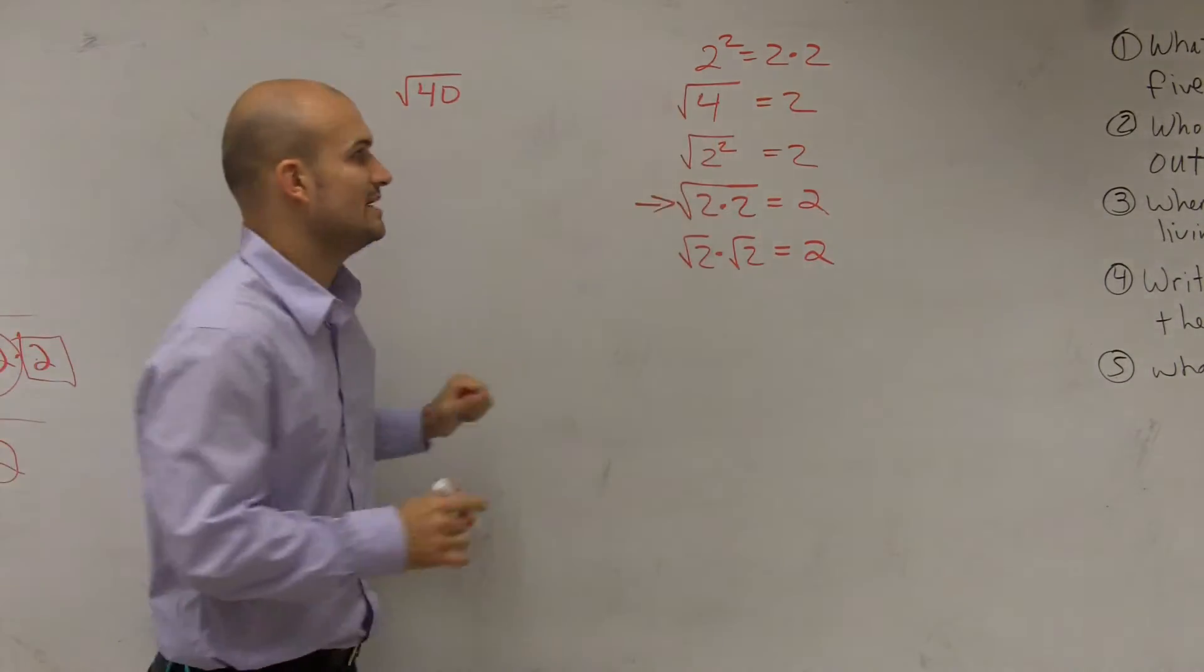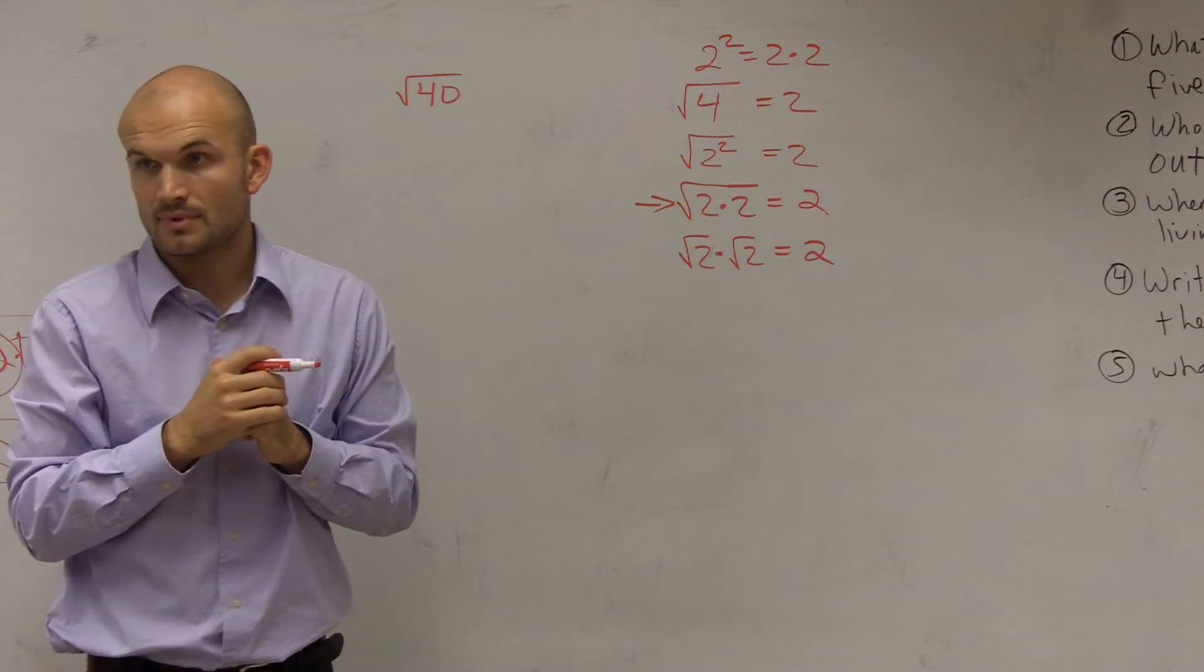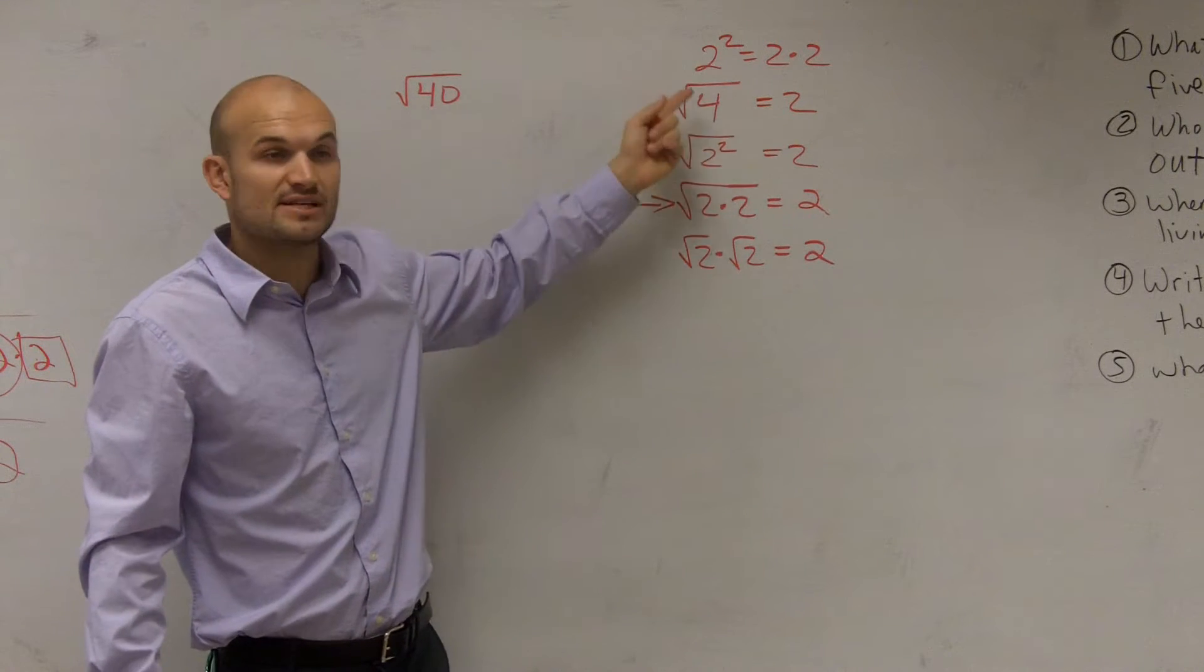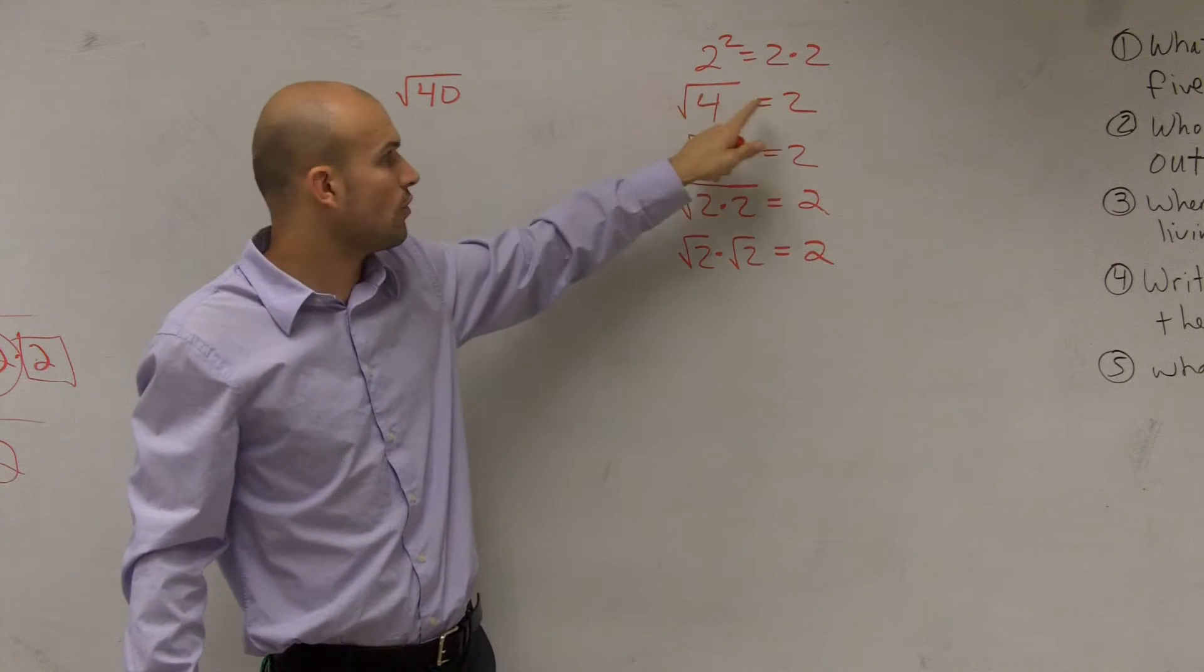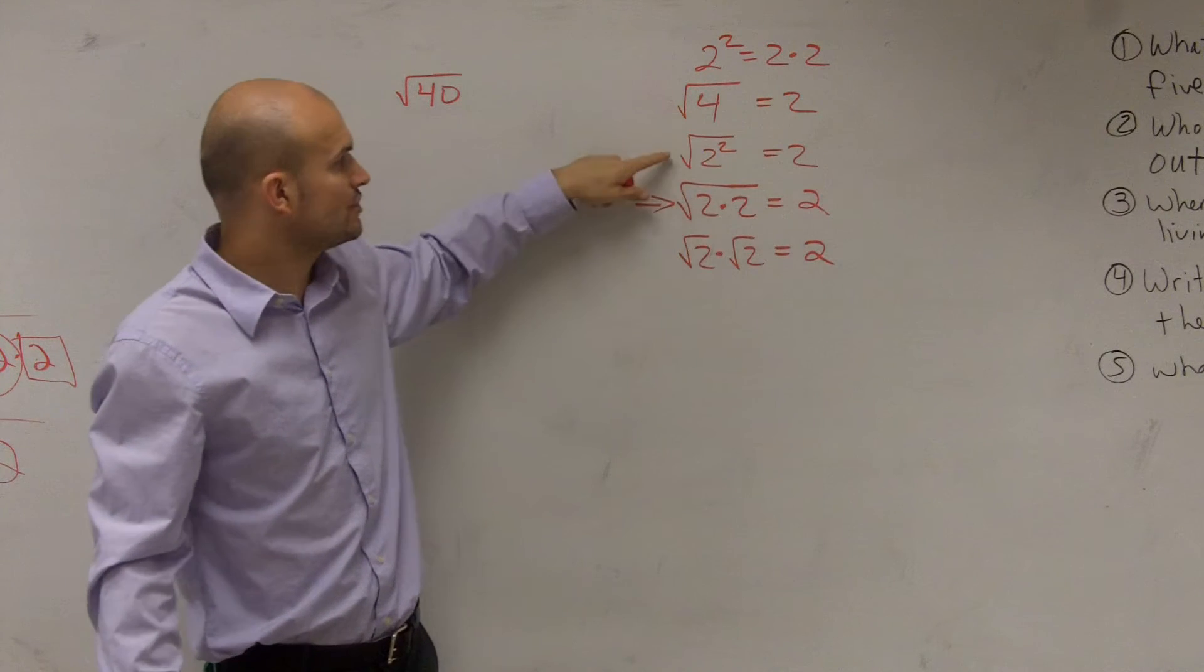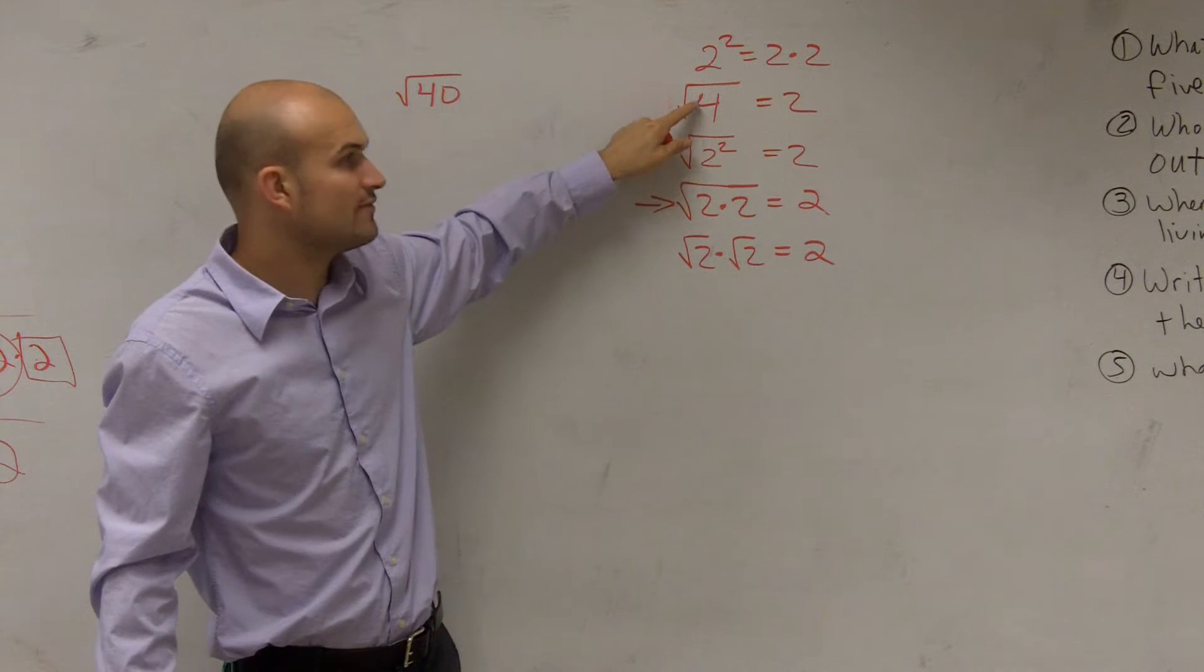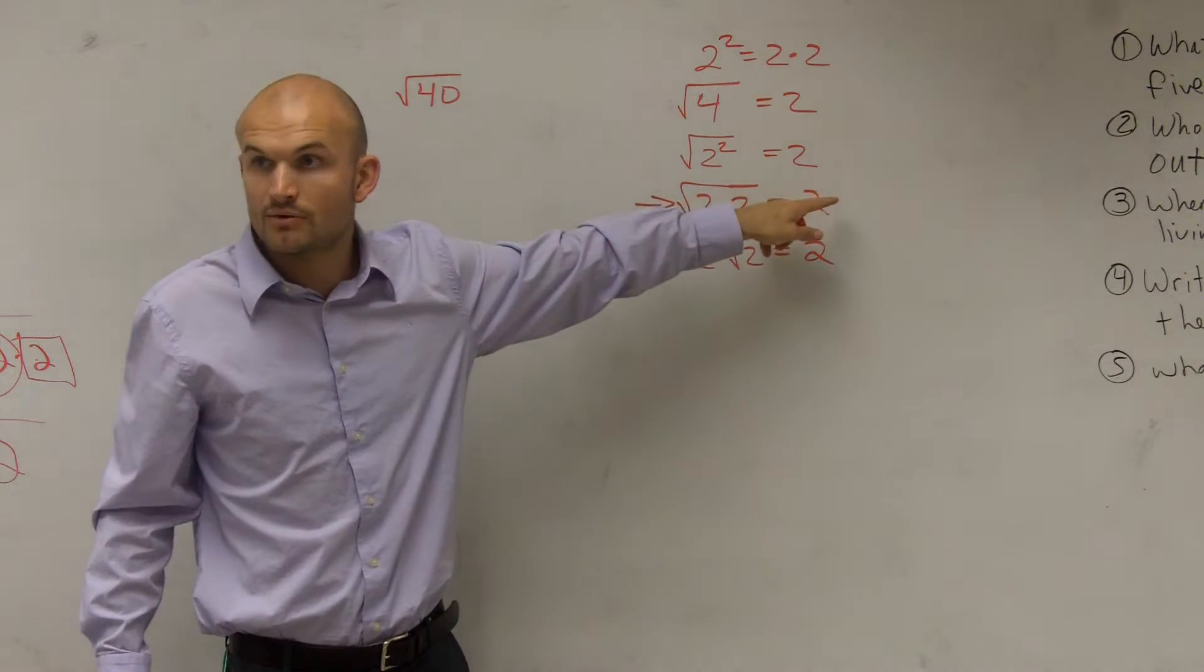First, we need to make sure that we agree that 2 squared equals 2 times 2, right? Then we also need to underscore that the square root of 4 is the opposite of squaring, so that means the square root of 4 means what two numbers multiply to give you 4, and our answer is 2. We need to agree that 4 can be rewritten as 2 squared, and therefore, if the square root of 4 is equal to 2, well, the square root of 2 squared is also equal to 2, right?